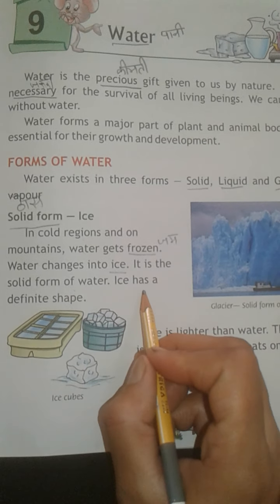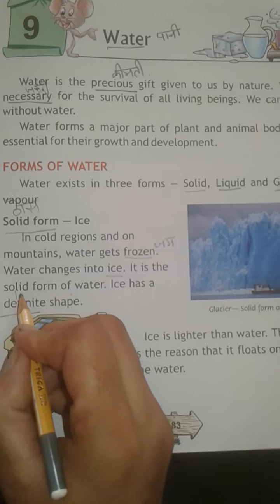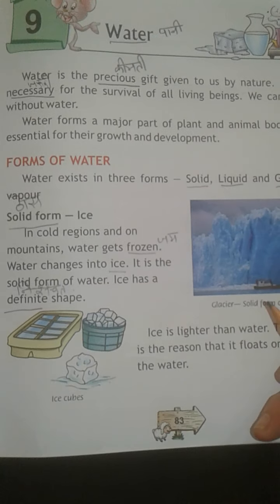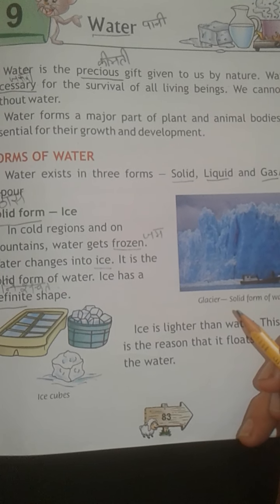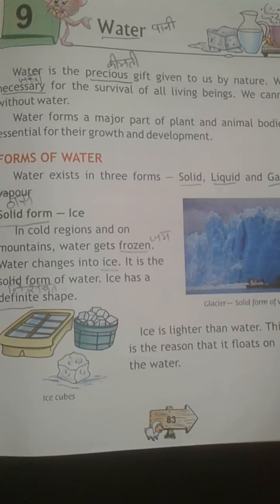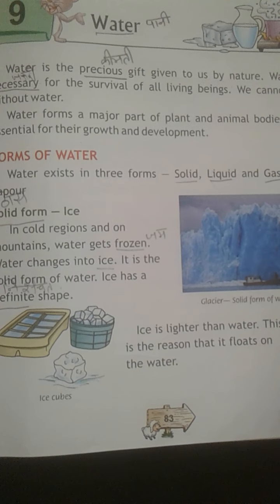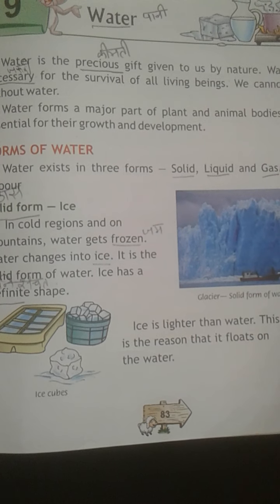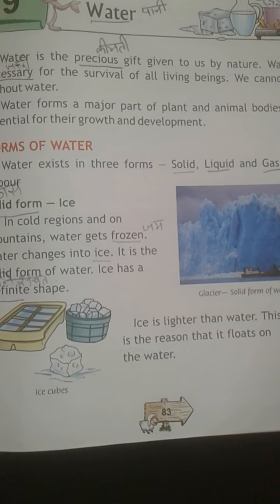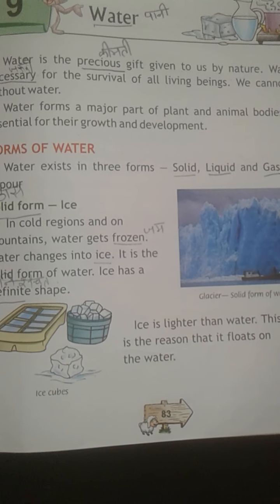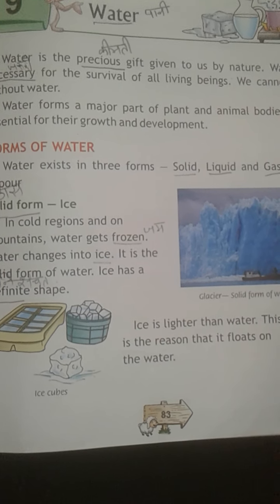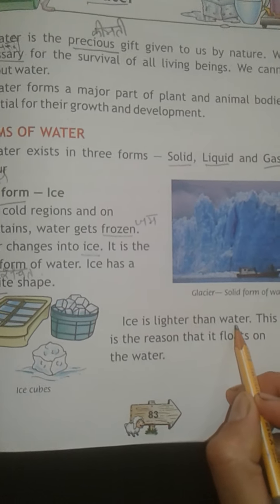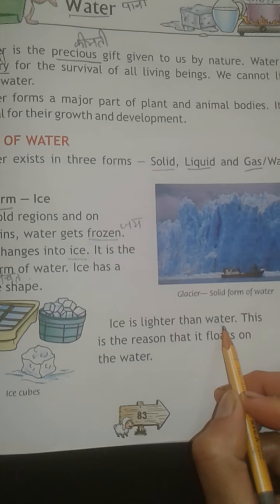Ice has a definite shape — ice की एक निश्चित shape होती है। अगर हम पानी को bowl में रख कर fridge में जमा देते हैं तो वो bowl की shape में जम कर हमें प्राप्त होती है। जिस भी shape में हम पानी डालेंगे, वो उसी shape में solid के रूप में मिलता है। Ice is lighter than water — बर्फ पानी से हल्की होती है।